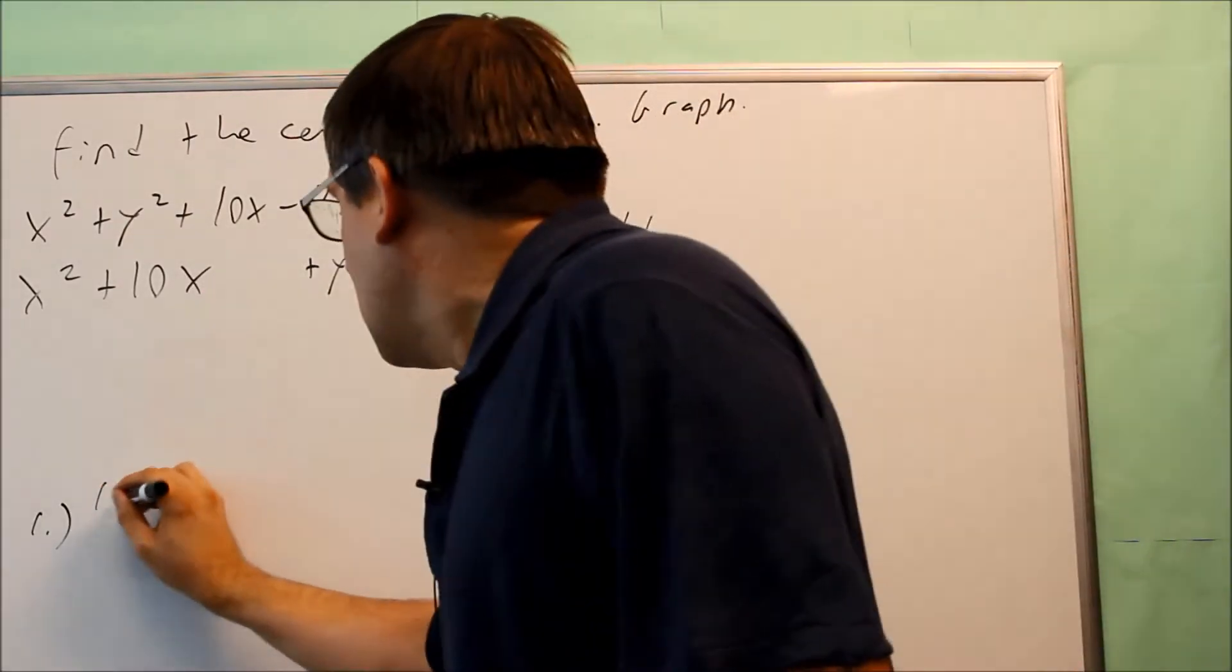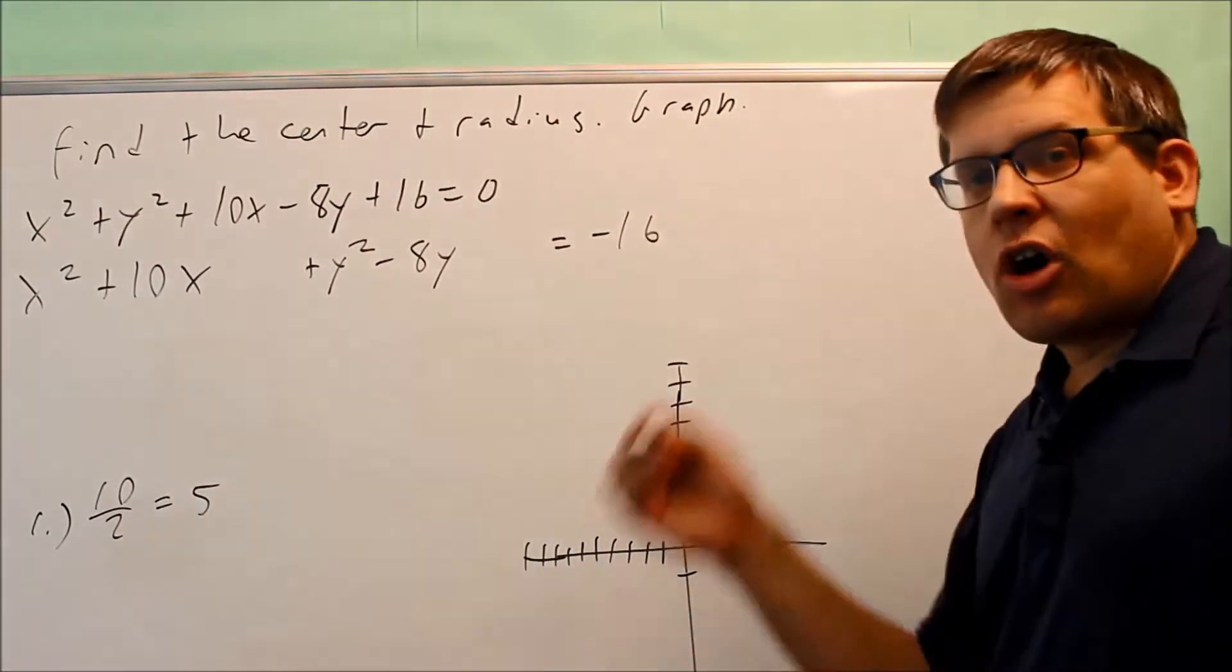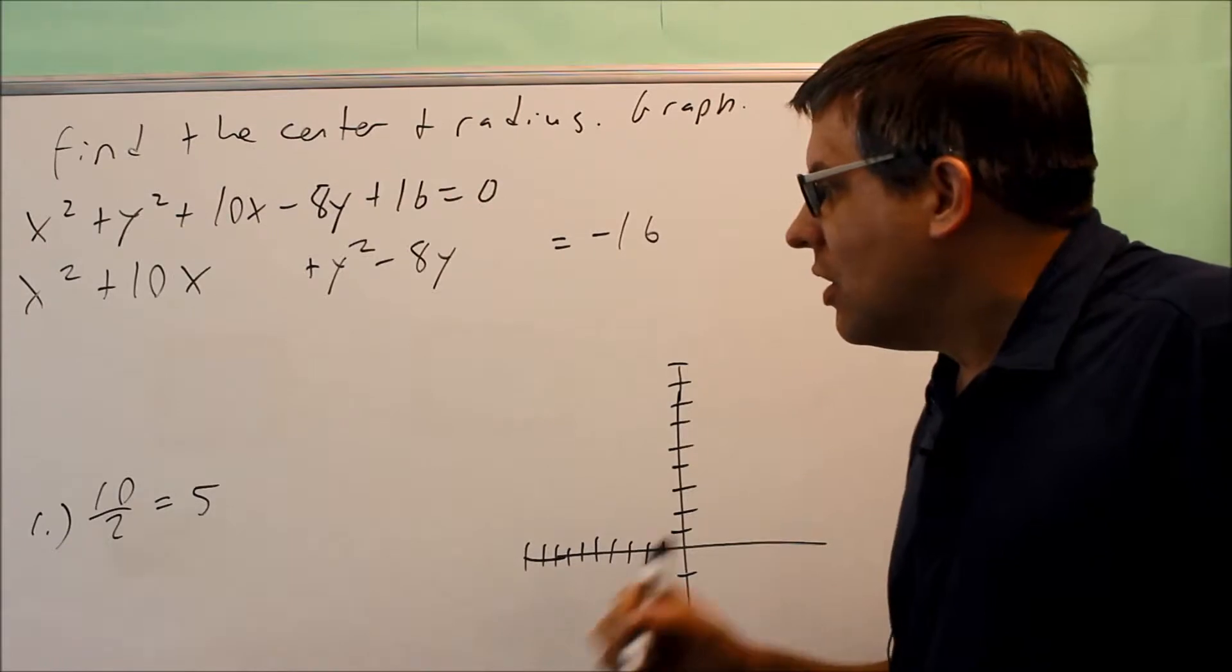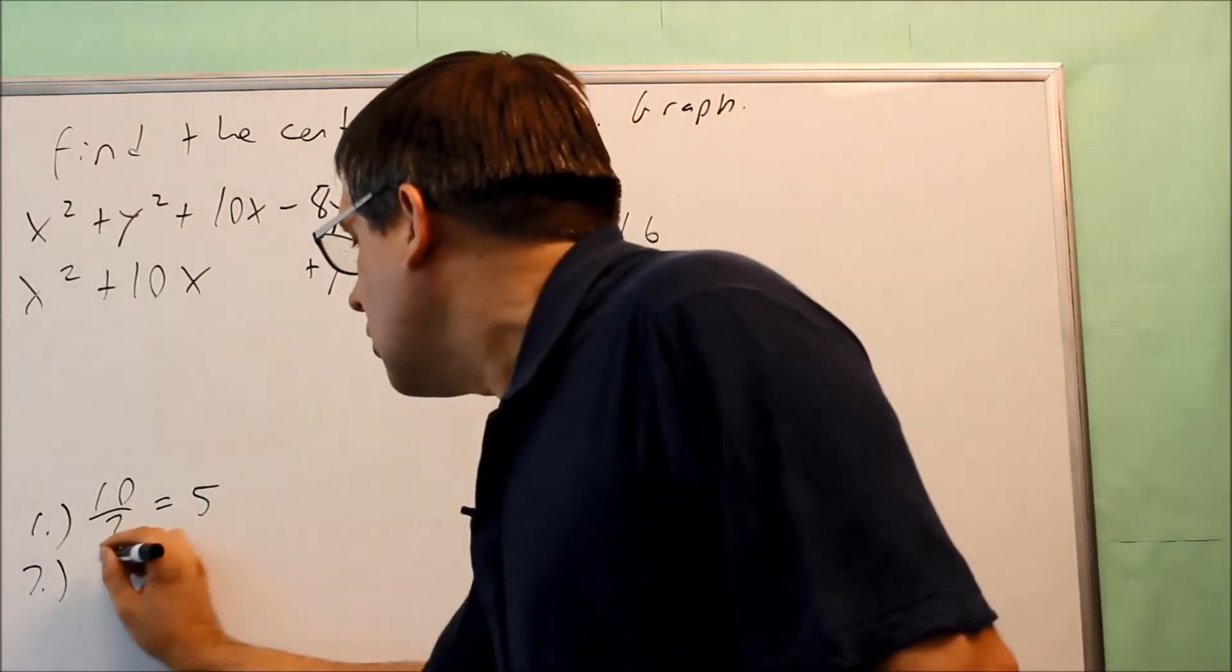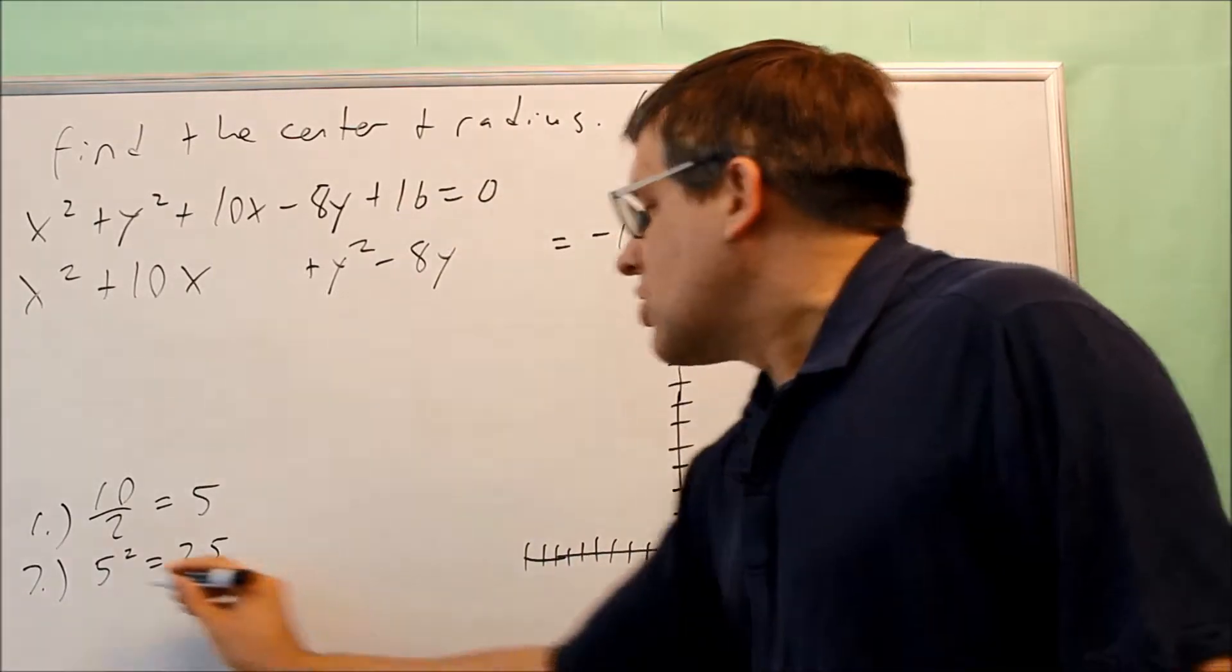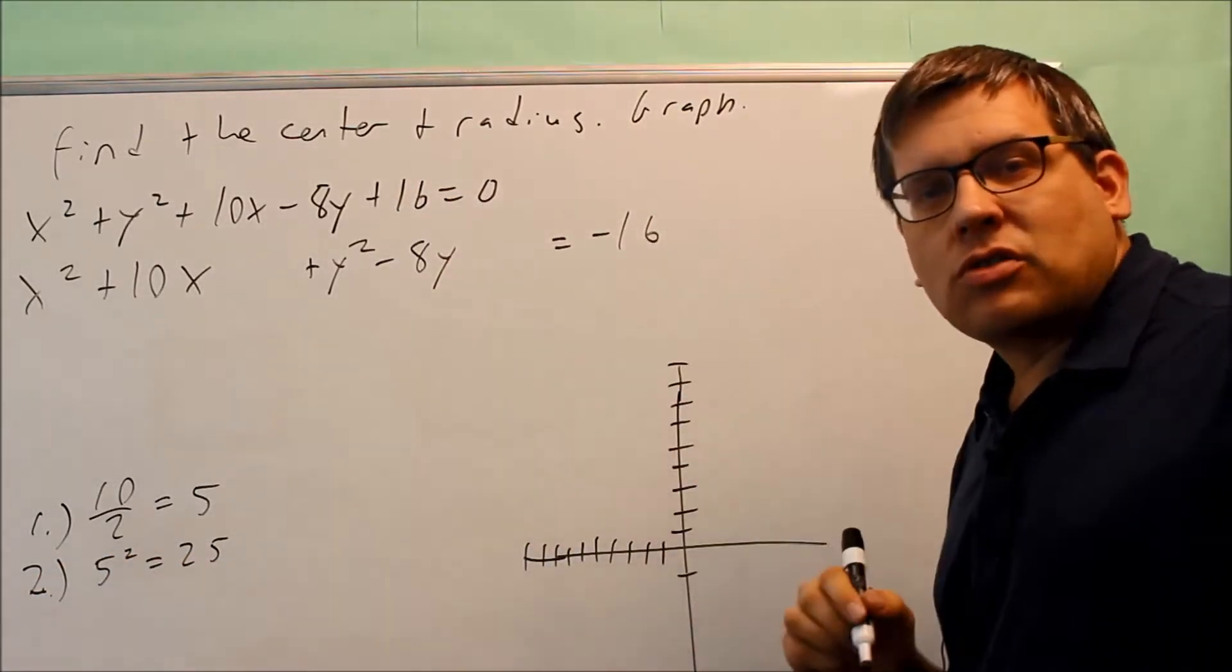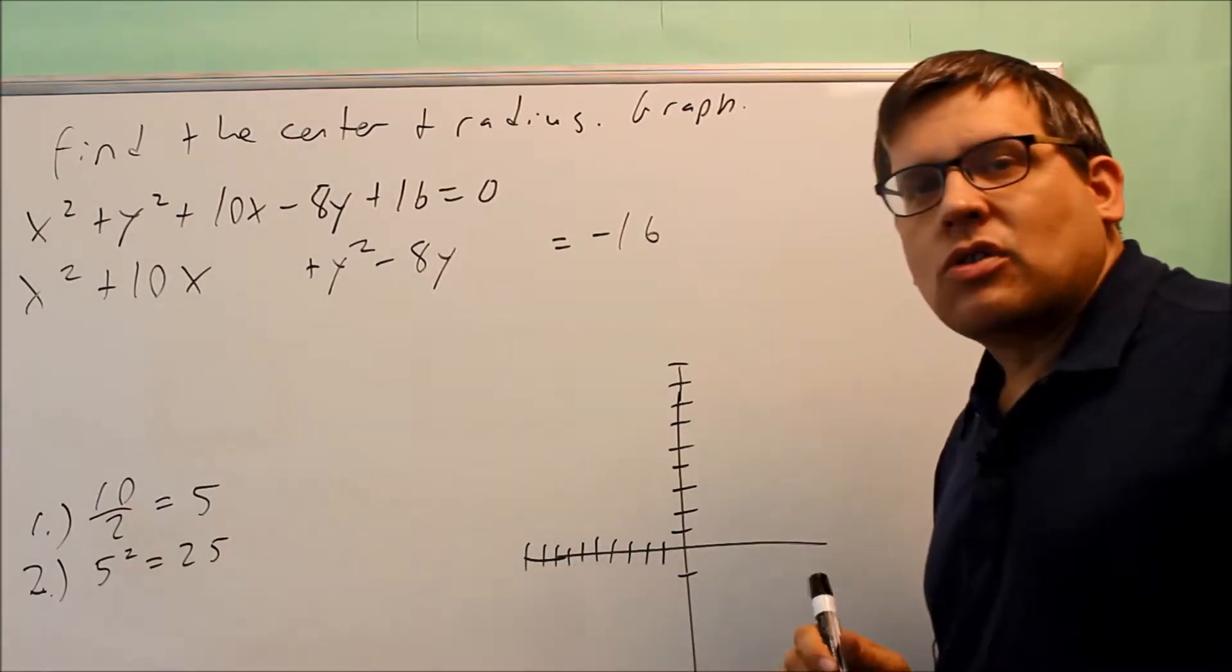I'm going to take 10. The first thing I'm going to do is divide by 2 and I get 5. So that's always the first step to complete the square, divide by 2. Next, I'm going to take that number and I'm going to square it. So that's always going to be your step number 2. So step 1 is always divide by 2. Step 2 is always squaring it.